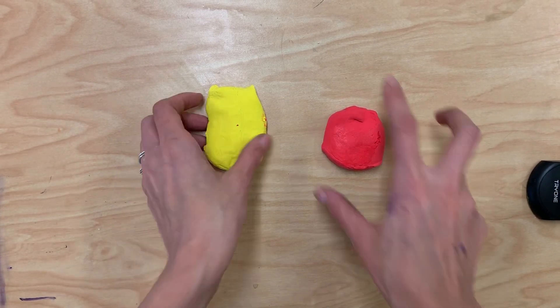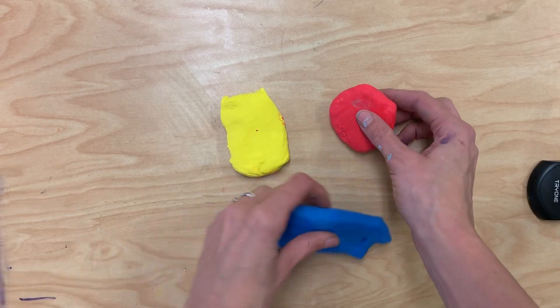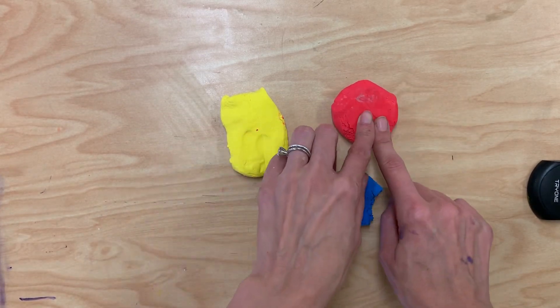Today we're going to be doing some color mixing with primary colors. We have three primary colors: yellow, red, and blue.